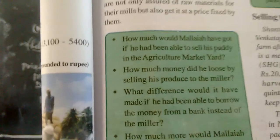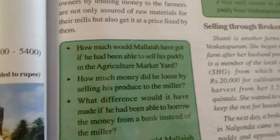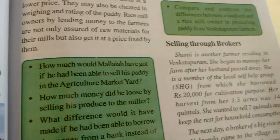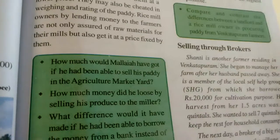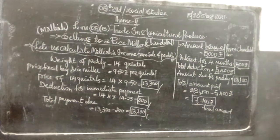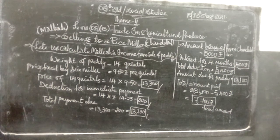Like Chandrasekhar, Malaya could have gotten better than the Rs. 7,700 final payment he received. If he had sold at the MSP of Rs. 1,080 per quintal at the agricultural market, he could have received significantly more than what he got from the rice miller.